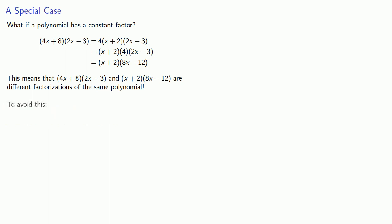To avoid this, it's useful to remember, if you can remove a constant factor, do so. So the proper final factorization of this polynomial would be this line where the common factor has been removed where possible.